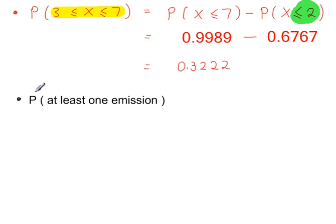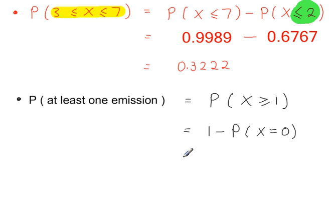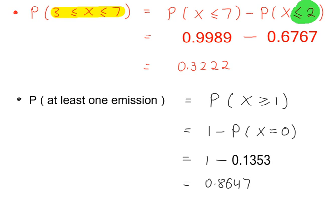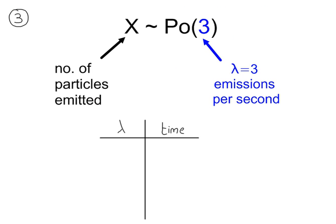Example 3. The probability of at least one emission is P(X ≥ 1), which equals 1 minus P(X = 0). The value of lambda is 3 per second for a 1-second interval. For a 2-second interval, we multiply by 2, giving lambda = 6.